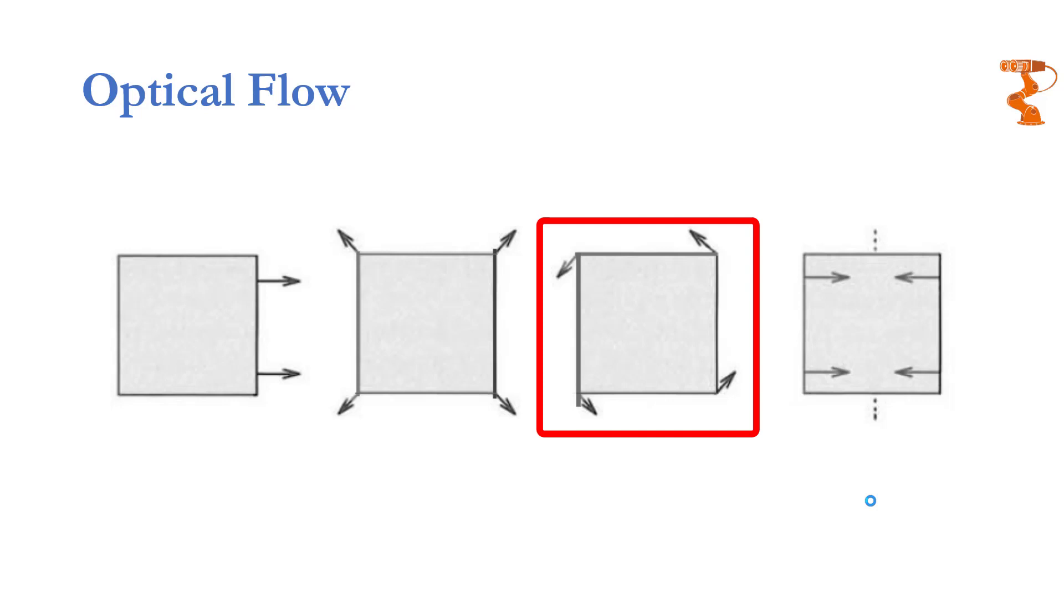The third type of motion, that is object rotating about the viewing axis, will be represented by arrows circling about an origin as shown over here.